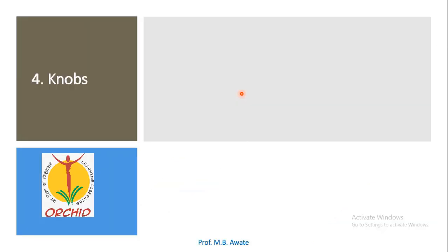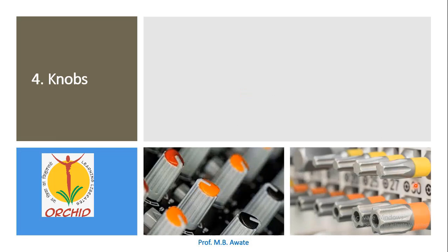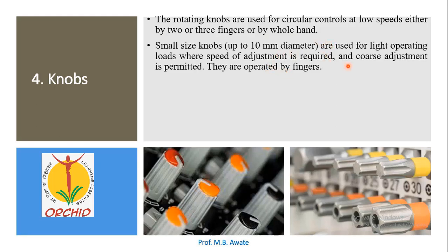Next control is knobs. Rotating knobs are used for circular controls at low speeds, operated by two or three fingers or sometimes by the whole hand. Small size knobs having diameter up to 10 mm are used for light duty applications where speed of adjustment is required and coarse adjustment is permitted. These are operated by means of fingers only because of their smaller size.